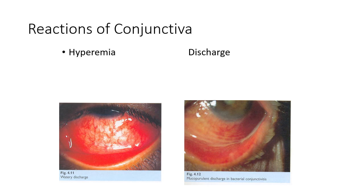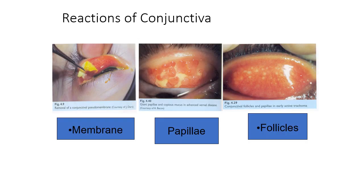The conjunctiva gives a reaction to an insult, which can be caused by bacteria, other organisms, or physical agents such as sunlight, dust, and air. Reactions come in the form of hyperemia, discharge, membrane formation, papillae, and follicles. The insult can be physical, chemical, or due to microorganisms.